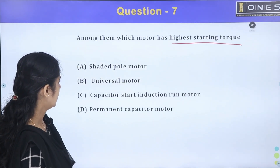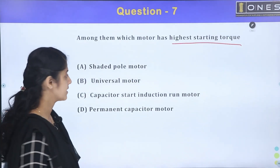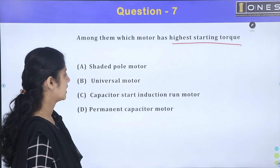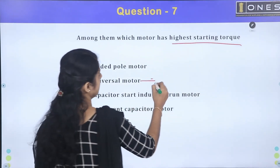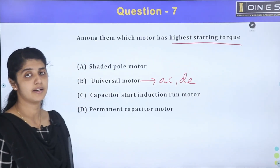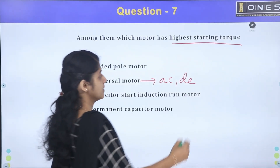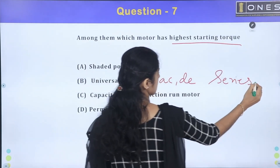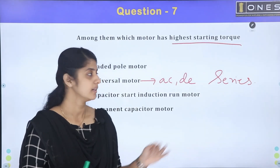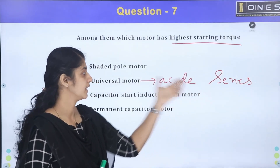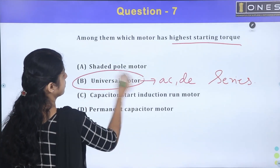If you use the universal motor, it is classified as a single-phase induction motor type. The options include shaded pole motor, capacitor start induction run motor, and permanent capacitor motor. The universal motor is a series type motor — it is similar to a series motor. The highest starting torque belongs to the universal motor, which is a series-type motor.